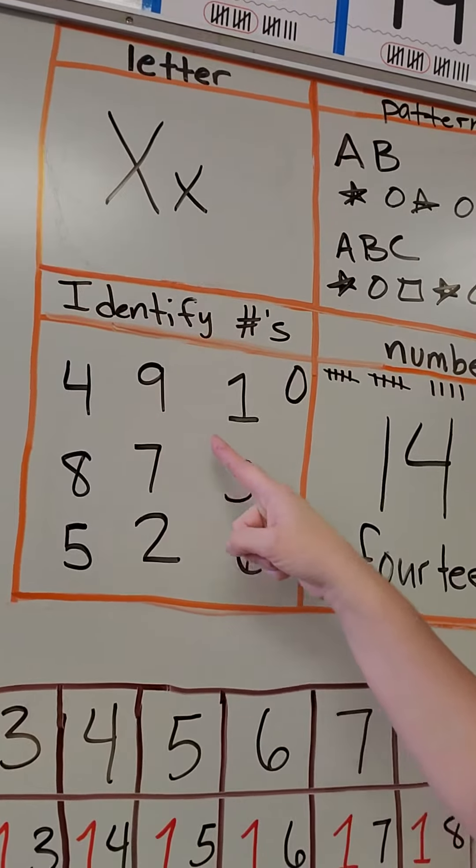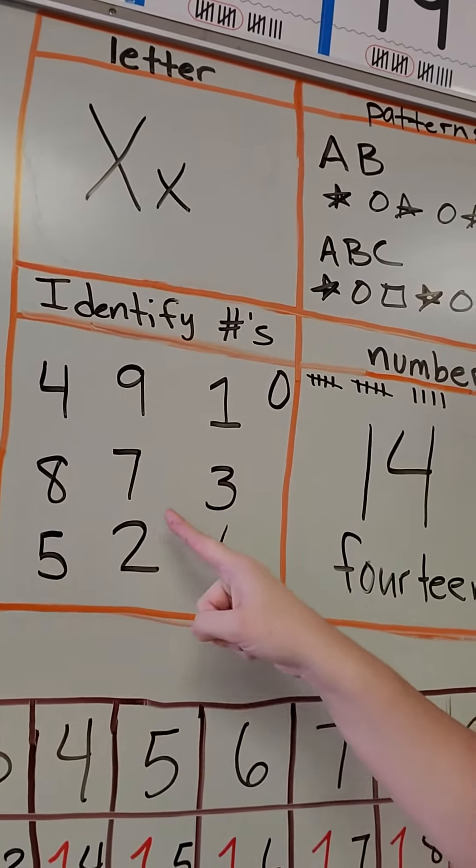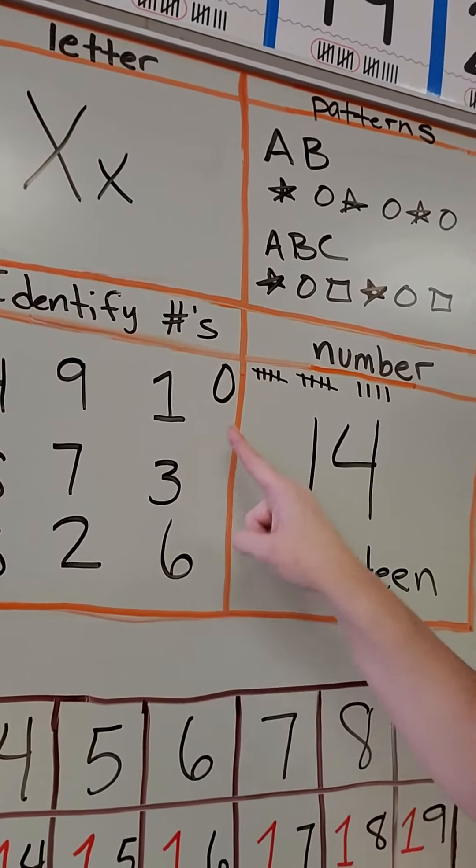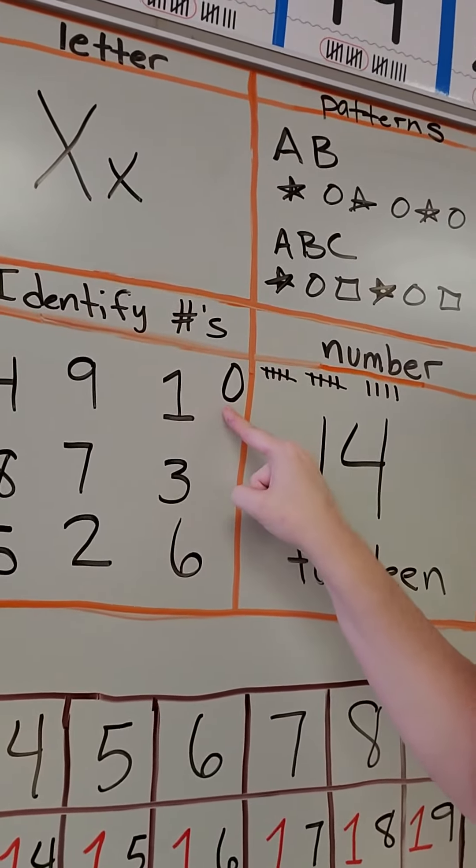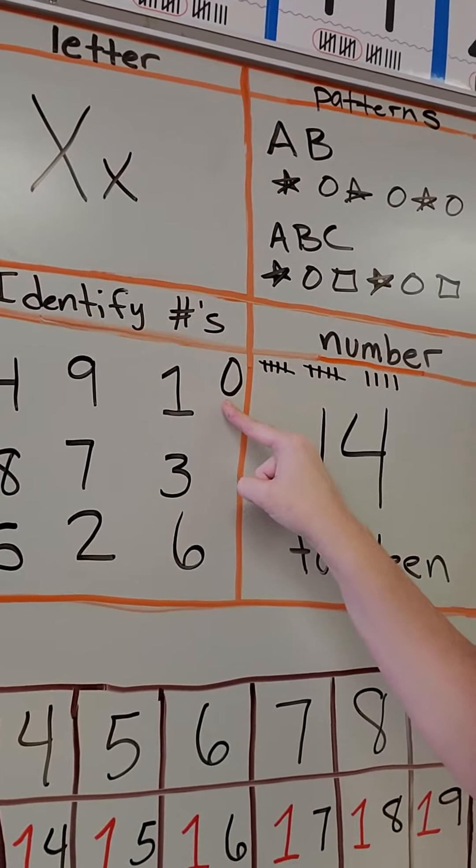Four, nine, one, eight, seven, three, five, two, six, zero, and a one and a zero together is ten.